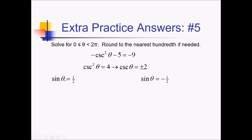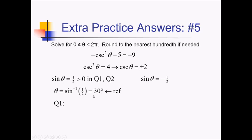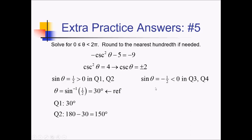Let's do these independently. Sine positive means my y value is positive, so I'm above the x-axis in quadrants 1 and 2 for my answers. The inverse sine of 1 half — the sine of 30 is 1 half, so sine inverse of 1 half is 30 degrees. That's a reference angle. For quadrant 1, 30 is also a quadrant 1 answer. For quadrant 2, we go 30 degrees backwards from 180: 180 minus 30 gives us 150 degrees. Now let's do the other branch. Sine negative means we're below the x-axis, so quadrants 3 and 4. Sine inverse of negative 1 half is negative 30 degrees, and the reference angle on that is still 30.